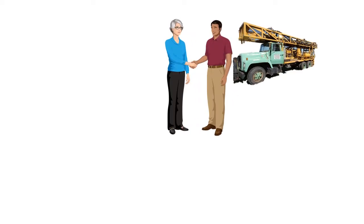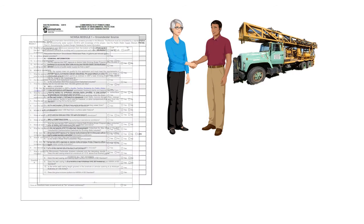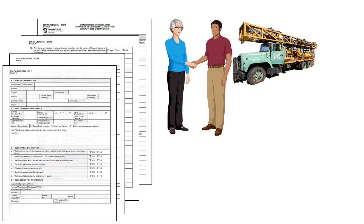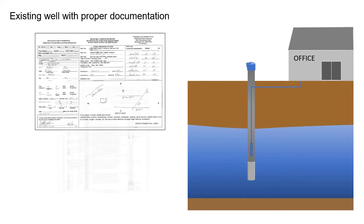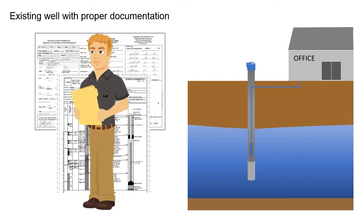The project applicant should also make sure that their contracted well driller has a copy of Module 1 prior to drilling the well. If you have an existing well with proper documentation, you should contact the original well driller that drilled the well and relay the information that needs to be completed in the Module 1 application. We will review this information in the coming steps.